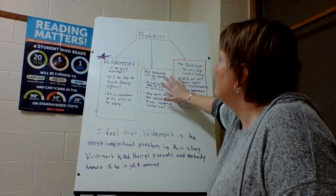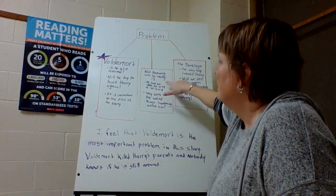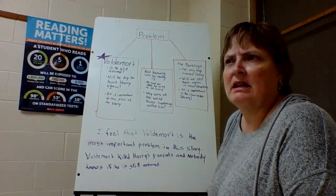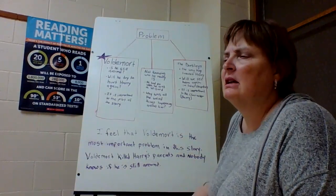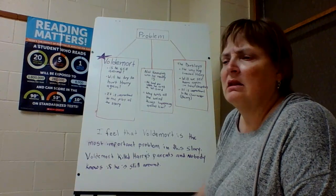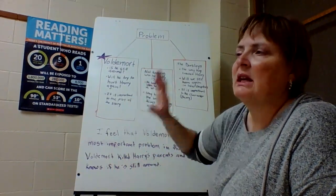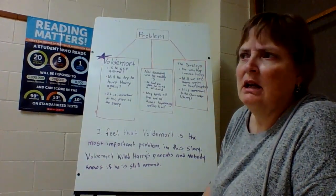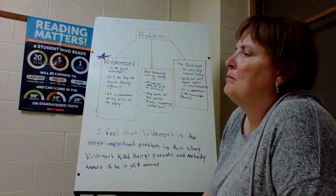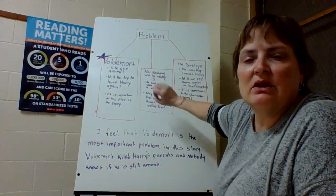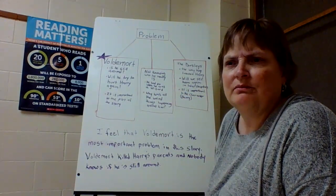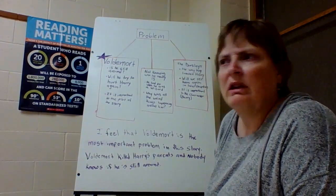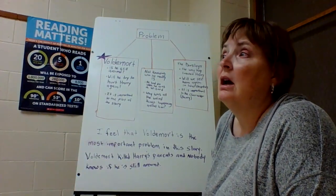Another problem is he doesn't really know who he is. He doesn't have a clue that he's a wizard. Why are some weird things happening to him that he can't explain — like the boa constrictor just getting up and the glass of the cage disappearing, and him being able to just slither out? Or how does his hair grow back overnight when his aunt had cut it off short? I think that was important to his character, because think about how confused you would be if you had no idea that you were actually a wizard or who you actually were.